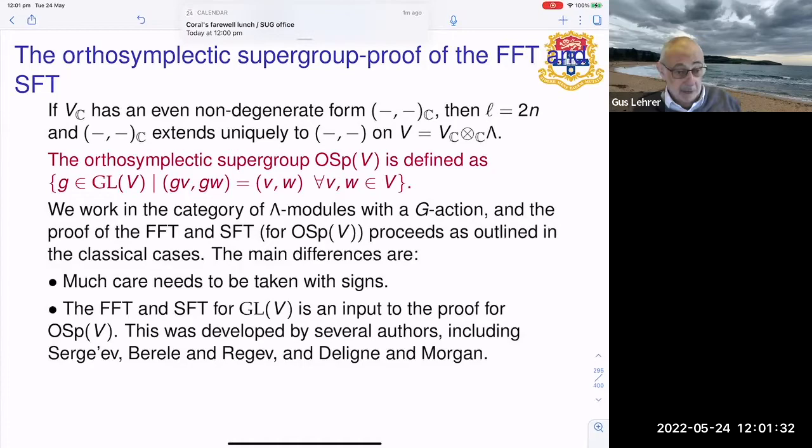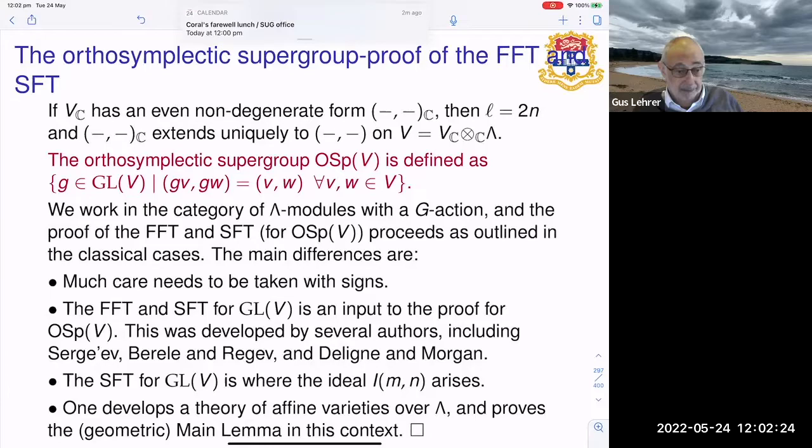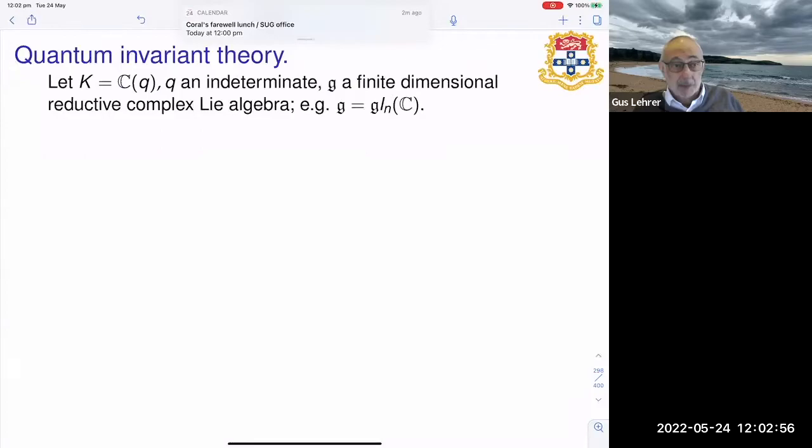So the main differences are you need a lot of care with signs, it's easy to get those wrong. The first and second fundamental theorems for GL(V) are inputs for the proof about OSP(V). The theory for GL(V) was developed mainly by Berele and Regev with contributions by Dilian and Morgan and Sergeyev himself, and that's where that ideal comes in, you remember that ideal with the rectangular diagram I just mentioned. And yes, one needs to have a version of the standard results in algebraic geometry for affine varieties over Lambda. And one proves a geometric main lemma in this context. And we now move on from the super world to the quantum world.